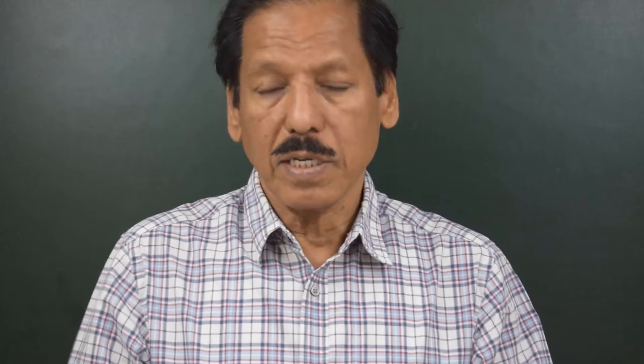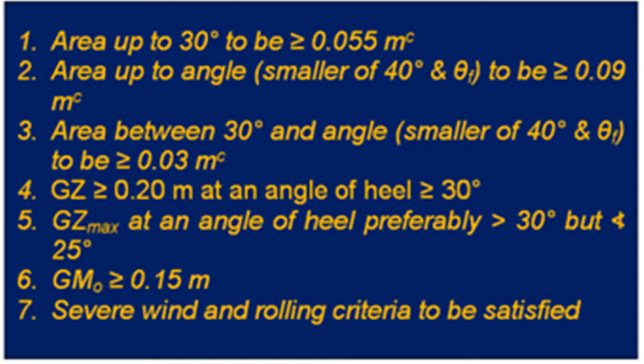So today I'm going to do a simple example to do the calculations in respect of confirming that the intact stability criteria are satisfied. There is this KN curve which is given in your stability book, the loading and stability manual as it is called.